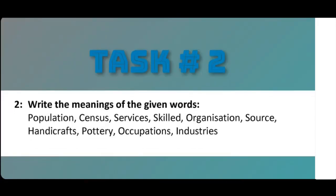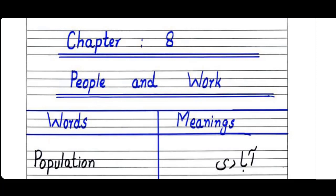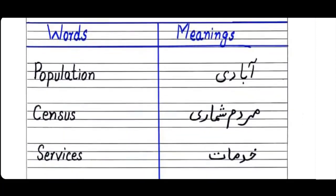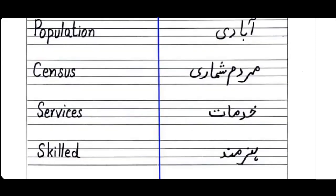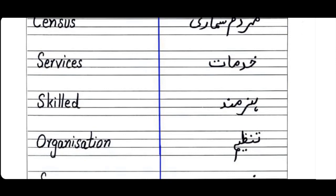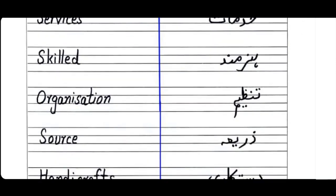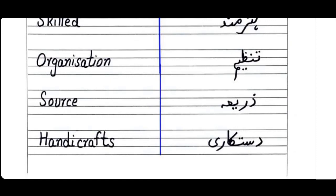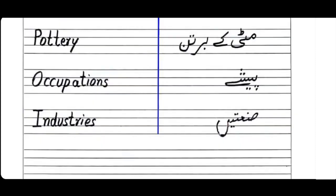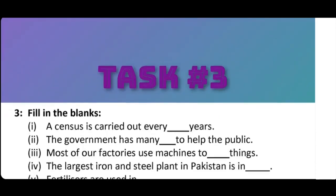Task Number 2: Write the meaning of the given words. Make a column for word and meaning. Words: Population - Abadi, Census - Mardum Shumari, Services - Khidmat, Skilled - Hunarmand, Organization - Tanzim, Source - Zariya, Handicraft - Dastkaari, Pottery - Matti Ke Bartan, Occupation - Peshya, Industries - Sana'at.